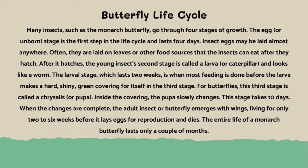When the changes are complete, the adult insect or butterfly emerges with wings, living for only two to six weeks before it lays eggs for reproduction and dies. The entire life of a monarch butterfly lasts only a couple of months.